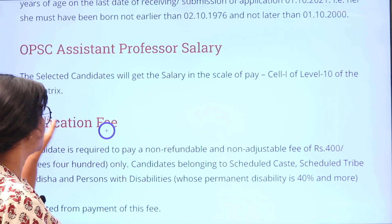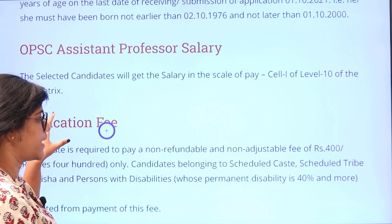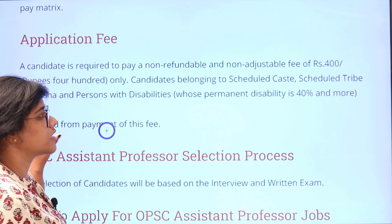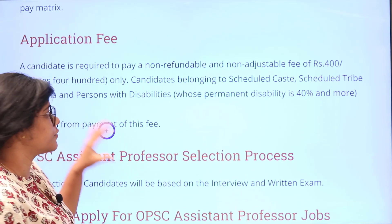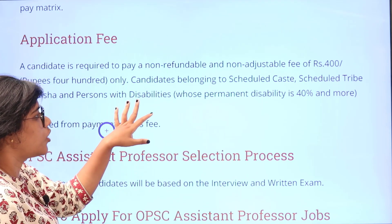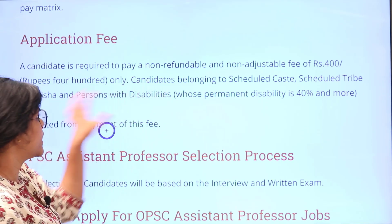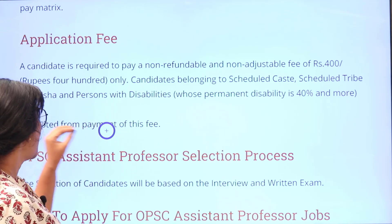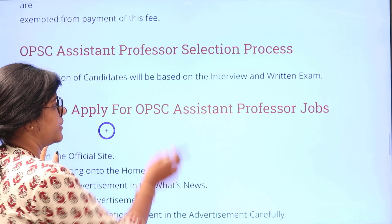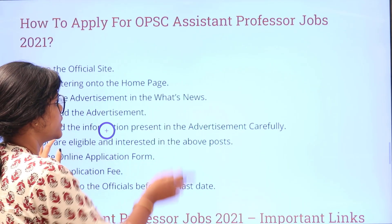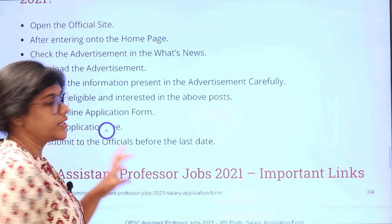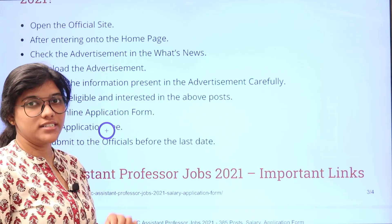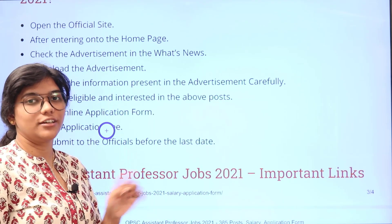Pay scale will be according to the pay matrix level. You should pay rupees 400 as the application fee. Candidates belonging to SC, ST, or persons with disability are exempted from paying any application fees. If you are willing to apply, visit the official website and read all the instructions and the official notification.